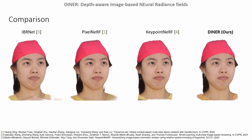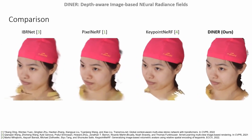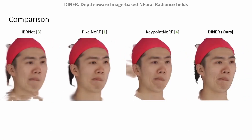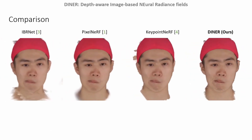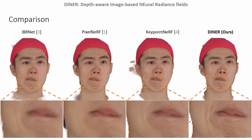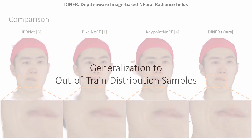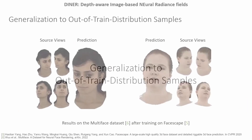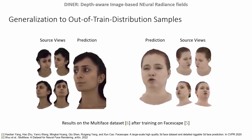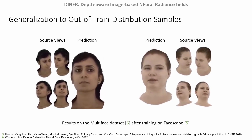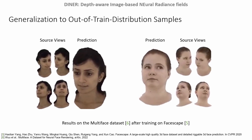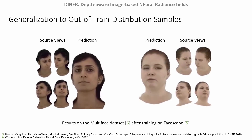Even for large viewpoint changes, our method produces images with high visual quality. Compared to other methods, DINER synthesizes also extreme facial expressions more faithfully and reconstructs fine details better. Even for samples that lie outside of the training distribution with different ethnicity and other headwear, DINER synthesizes plausible results. Note also the high temporal stability for continuous sequences despite DINER being trained only on static frames.